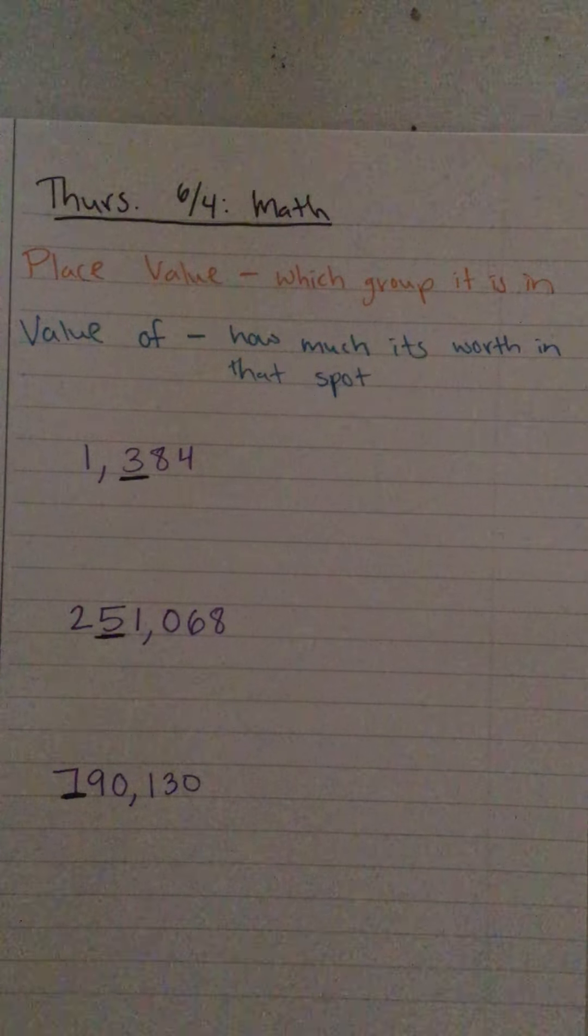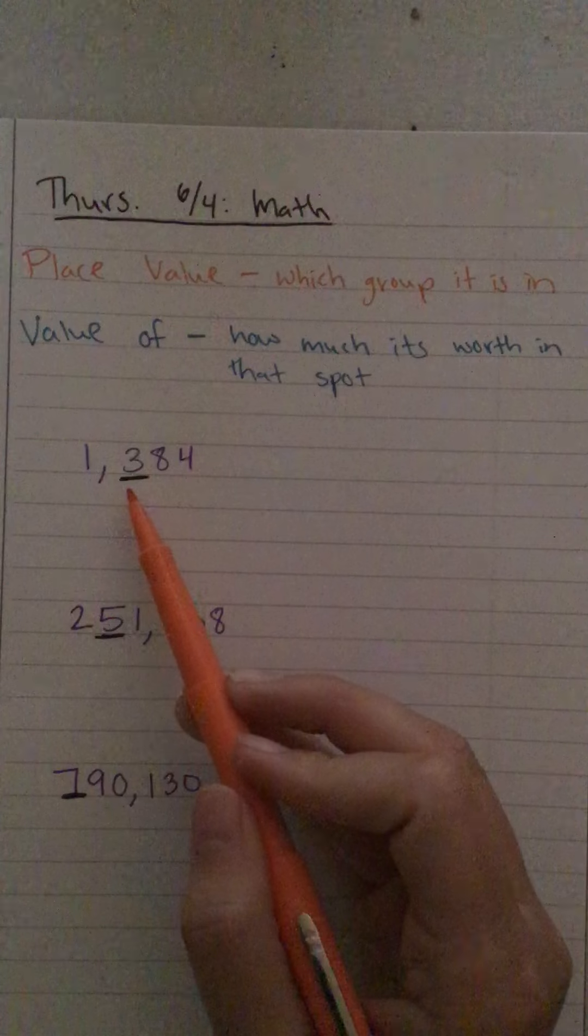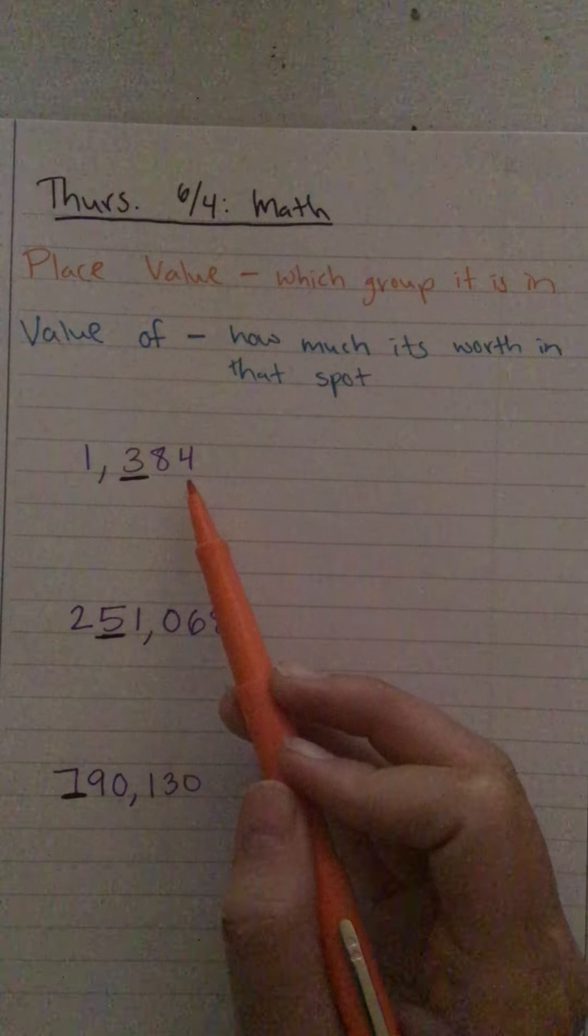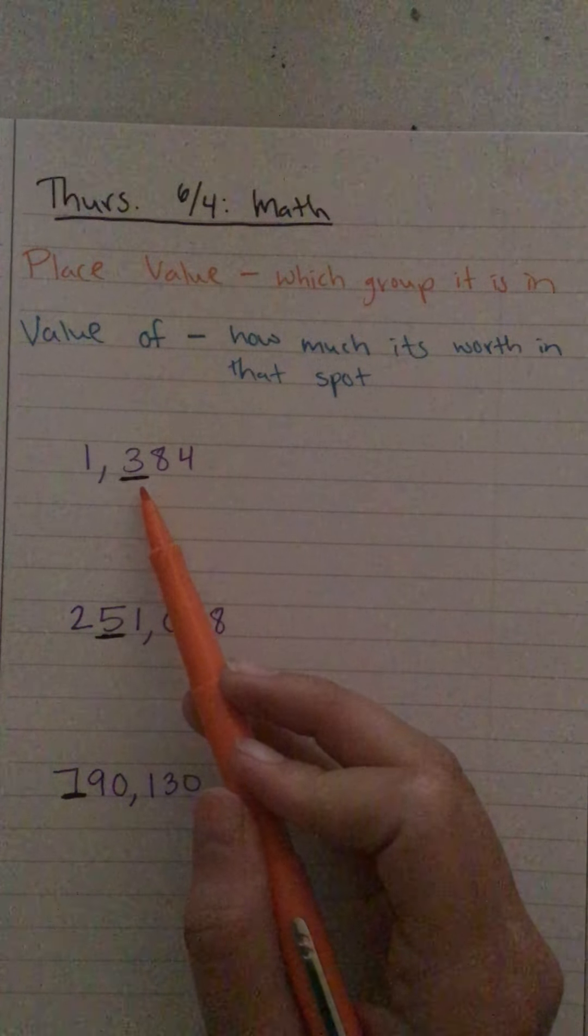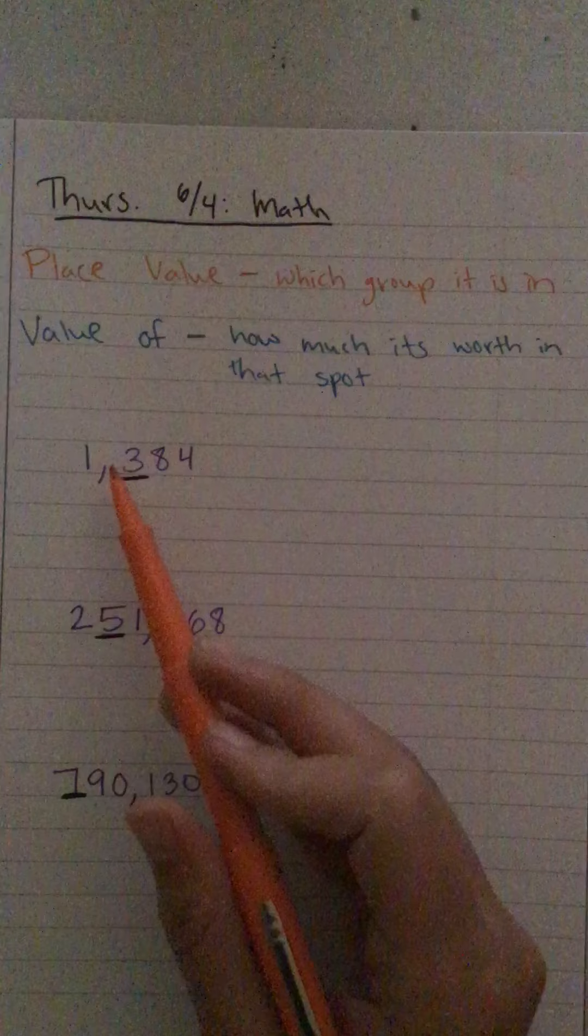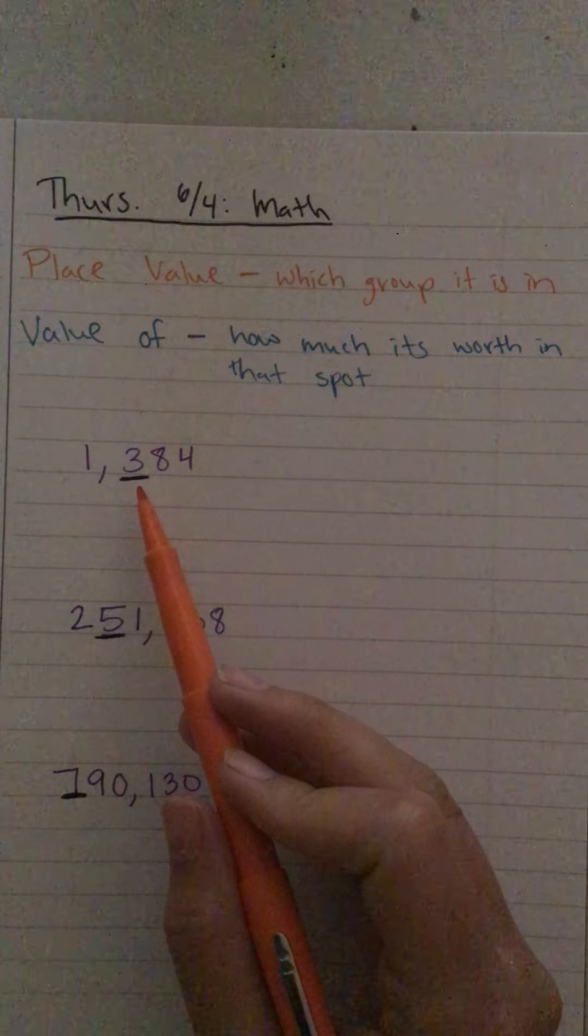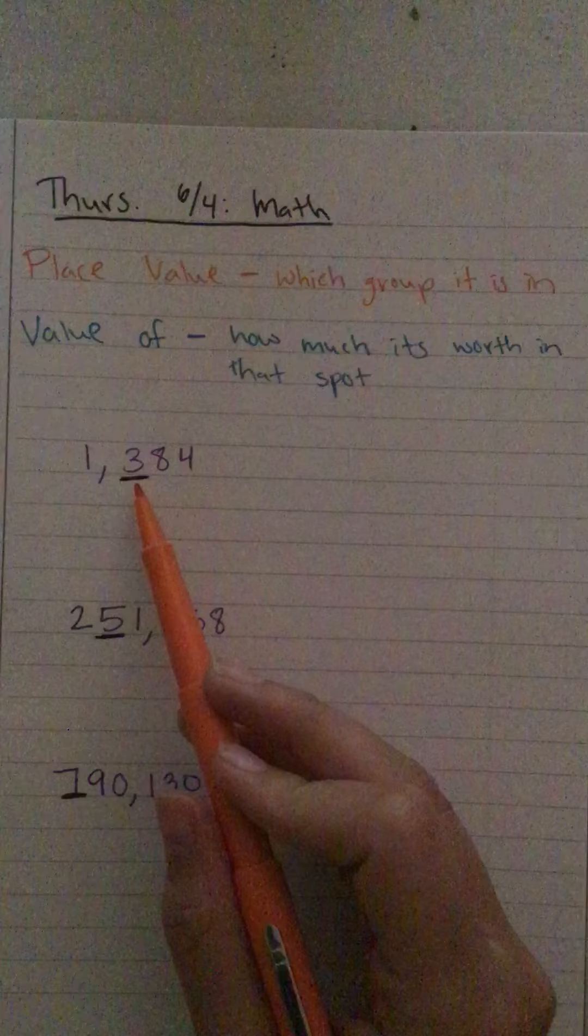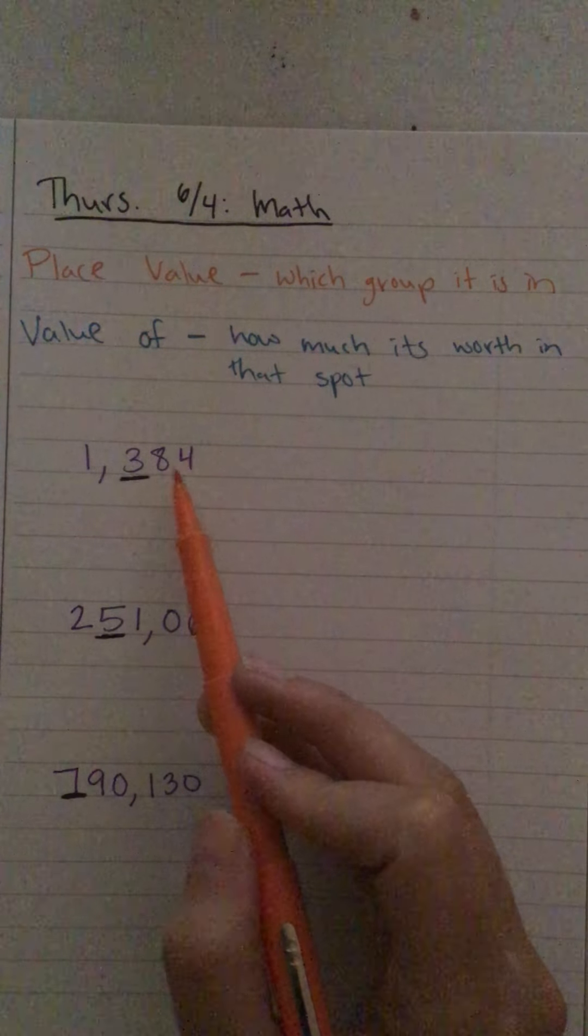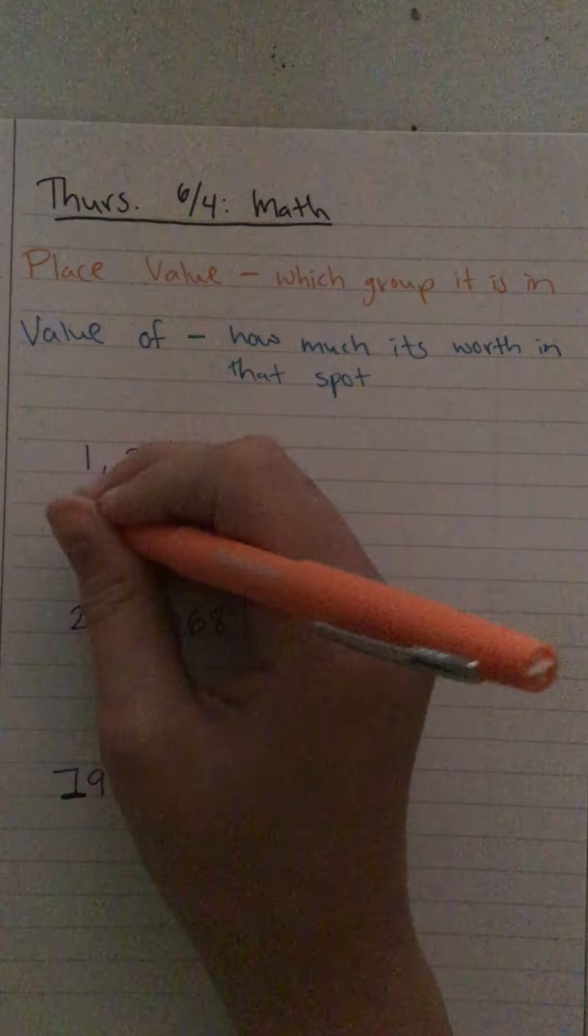Let's check out this number 1,384. If you notice, I underline the three, so that's what I'm going to look for. The place value of the three is - well, I know this is ones, tens, hundreds - so that three is in the hundreds spot.